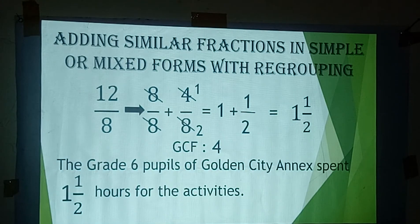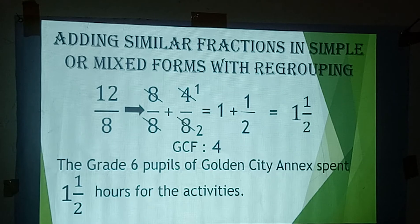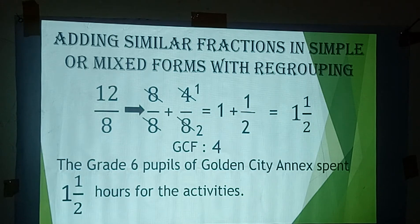12 over 8 equals 8 over 8 plus 4 over 8, which equals 1 plus 1 half, which is 1 and 1 half.